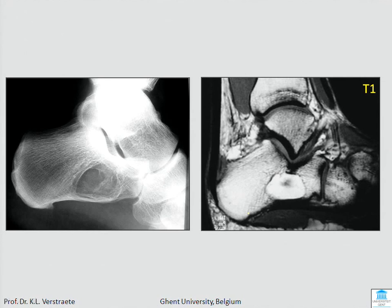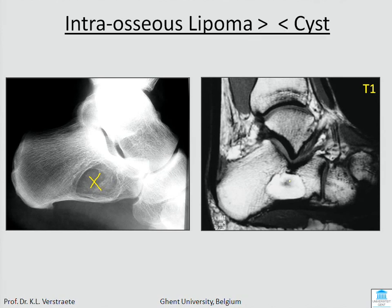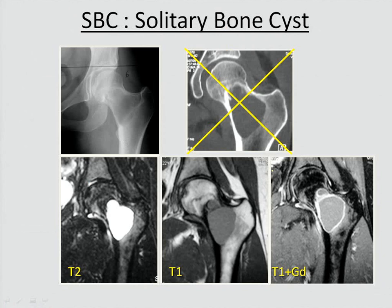So we have seen bone tumors, cartilaginous tumors, and fibrous tumors — now we go to all the rest. This one is a lytic lesion in the calcaneus, and on T1 it's white — so when it's white on T1 you know it's an intraosseous lipoma. If it were dark on T1 and white on T2, it would be a cyst. Another type is the solitary bone cyst — a lytic lesion where you do MRI: it's white on T2, dark on T1, and after gadolinium you see enhancement of the wall.